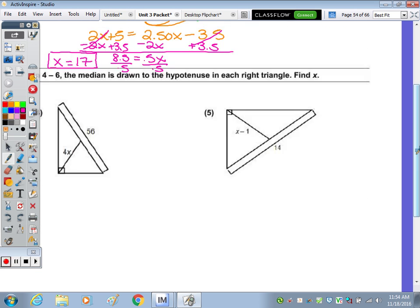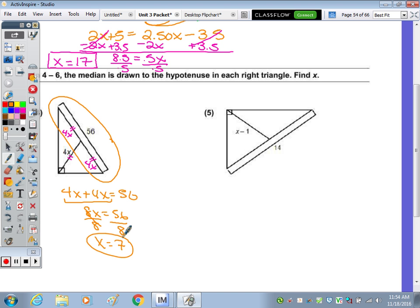In four through six, the median is drawn to the hypotenuse in each right triangle. So the median is four X. If this is four X, this is four X, and this is four X. If you take a look at just the hypotenuse, four X plus four X equals 56. Four X plus four X is eight X. Divide by eight, X is seven. Another way to do that one is to say that four X equals half of 56. The median is half the hypotenuse. So four X equals 28. Divide by four and X is seven.